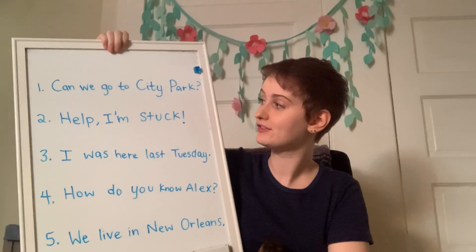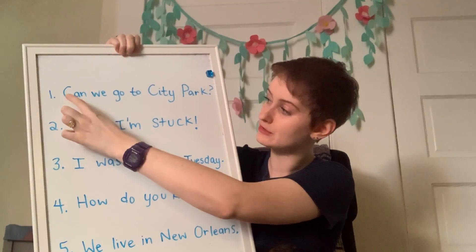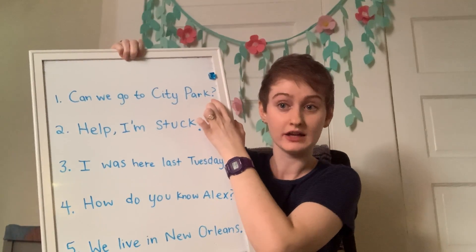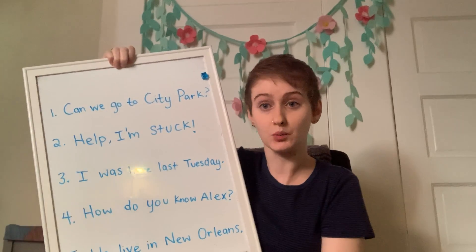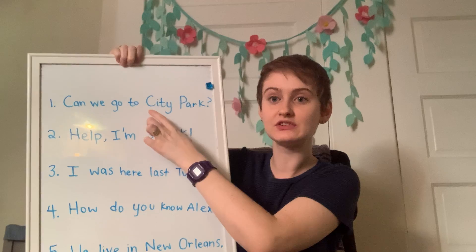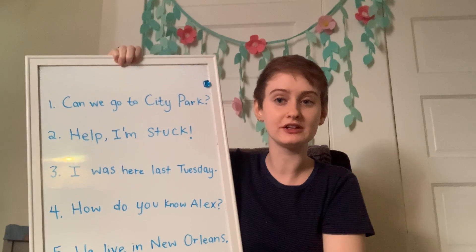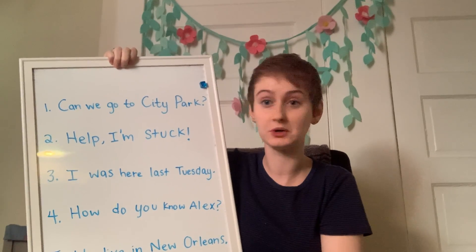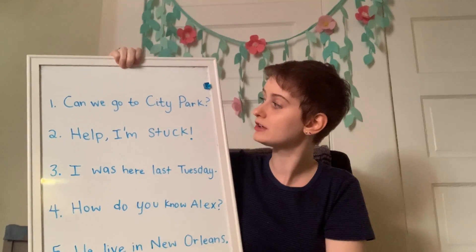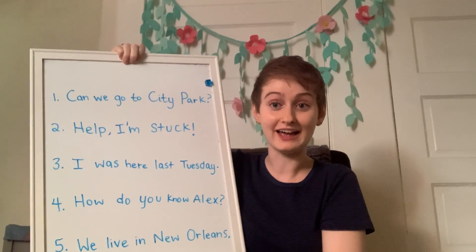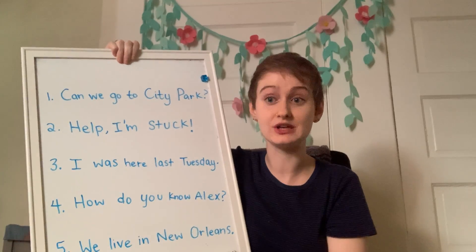Let's look at this first one. It says, 'Can we go to City Park?' You'll see I put a capital C because it's the first word of the sentence, and a question mark because if a sentence starts with 'can,' it's probably going to be a question. You'll also notice I capitalized 'City Park' because it is a specific park. If it just said 'Can we go to the park?' you wouldn't capitalize it, because it's not talking about a specific place with a name. But because we are talking about City Park, we capitalize both the C in City and the P in Park.